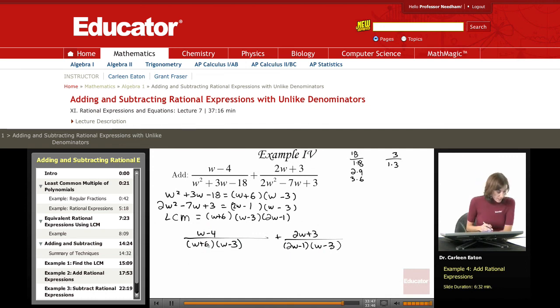Now, looking at what I'm missing here, I have W plus 6 and W minus 3. I'm missing 2W minus 1. So I need to multiply both the numerator and the denominator by 2W minus 1. Over here, I've got the 2W minus 1 and the W minus 3, but I'm missing W plus 6. So I'm going to go ahead and multiply both the numerator and the denominator by that.